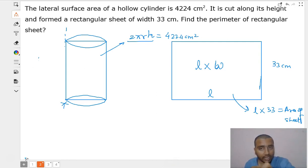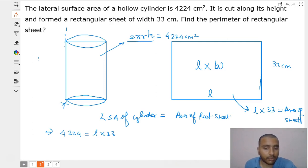Therefore the area of the cylinder equals the area of the sheet. The lateral surface area of the cylinder, 2πRh, equals the area of the rectangular sheet. From there we get 4224 equals length multiplied by 33.